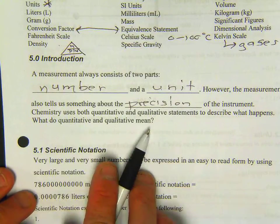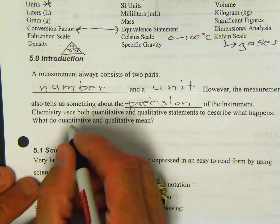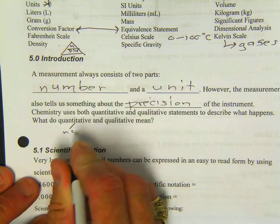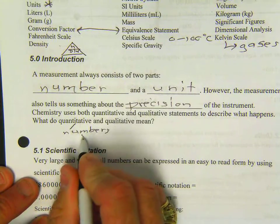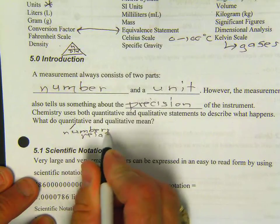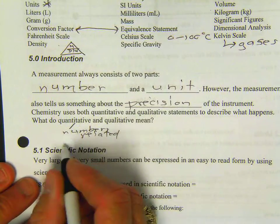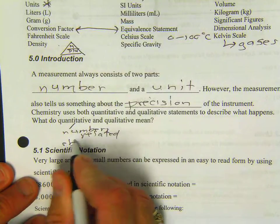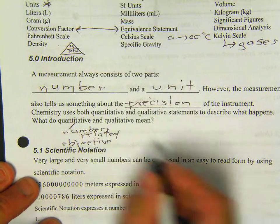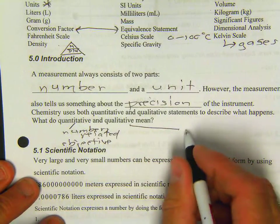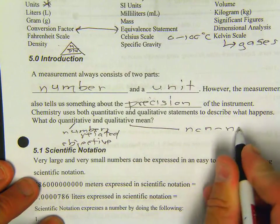And we also have quantitative and qualitative. Quantitative is numbers related. Qualitative is non-numbers, and it's subjective.